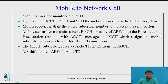Now let us discuss the next part of GSM call procedure, that is mobile to network call. The mobile subscriber monitors the BCCH — Broadcast Control Channel — and gets synchronized to the nearest base station by receiving the BCCH, FCCH (frequency correction channel), and SCH, so that the mobile subscriber is locked onto the system to initiate a call.